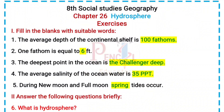8th Social Science Geography, Chapter 26: Hydrosphere Exercises. 1. Fill in the blanks with suitable words. 1. The average depth of the continental shelf is 100 fathoms. 2. One fathom is equal to 6 feet. 3. The deepest point in the ocean is the Challenger Deep.